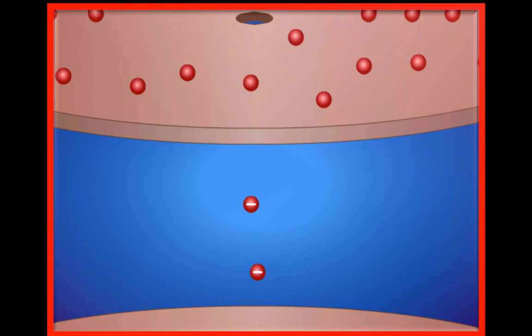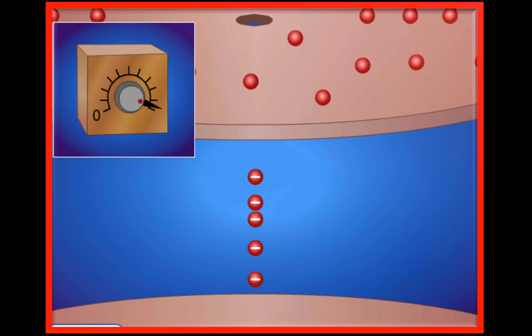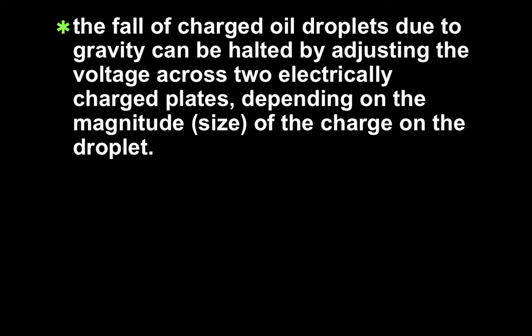The negatively charged oil droplets were able to be stopped from falling by adjusting the voltage across the two plates. As the voltage across the plates was increased, the speed at which the oil droplets fell decreased. As the voltage is increased enough, some of the oil droplets actually moved upward towards the positive plate. And if the voltage was set just right, an oil droplet could be suspended mid-air between the two plates. In other words, the fall of charged oil droplets due to gravity can be halted by adjusting the voltage across two electrically charged plates, depending on the magnitude or size of the charge on the droplet.